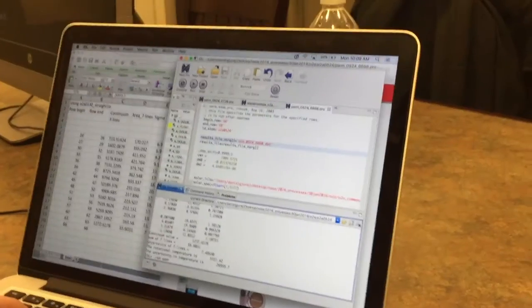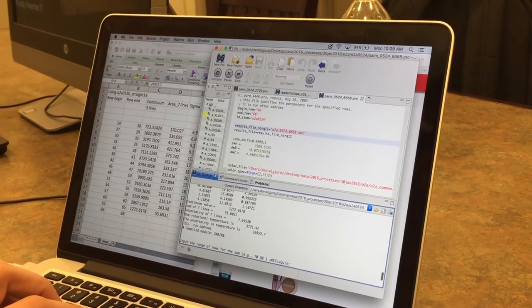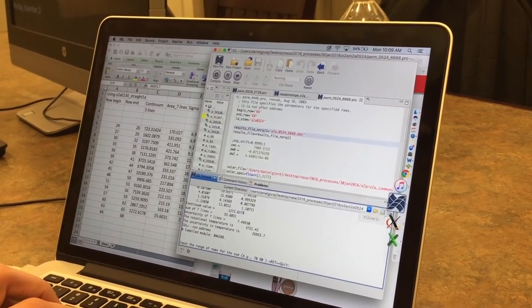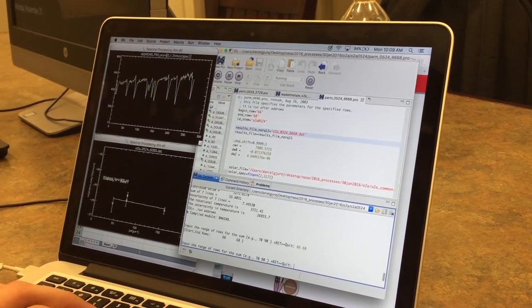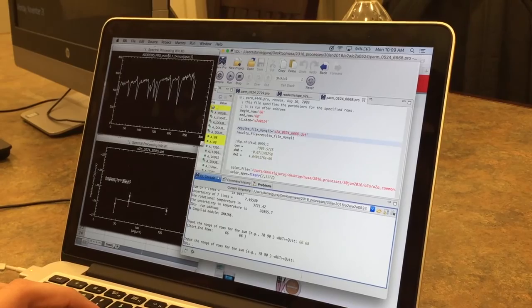IDL is a software program that Novak and his students use to analyze their data. It's a standard analytical program that astronomers use. The program is very good at working with images. The images gathered from the telescopes are loaded into IDL where they can then be analyzed.